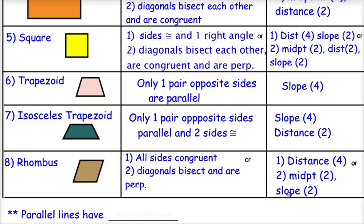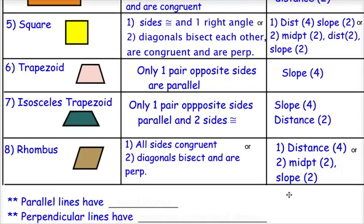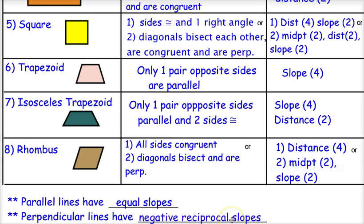While we're doing problems for the next two days, we're going to practice all of this. Remember: parallel lines have equal slopes, which helps prove something is a parallelogram. Perpendicular lines have slopes that are negative reciprocals, which shows a right angle for figures like the square and rectangle, or shows diagonals are perpendicular. All you have to do is fill in your summary sheet and we'll practice these for the next two days.